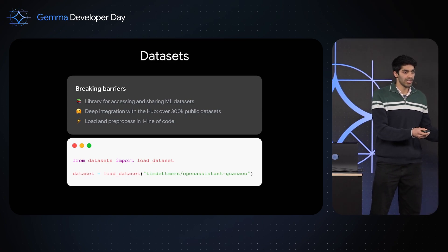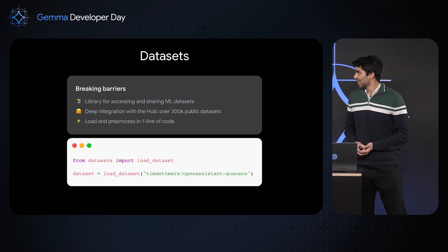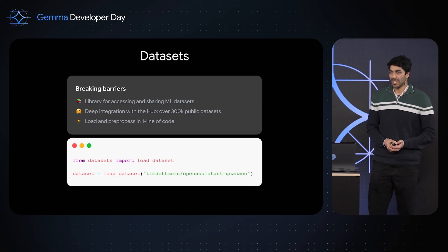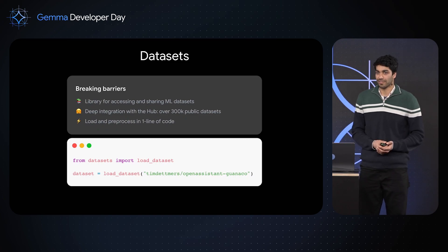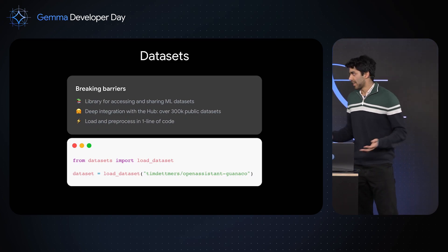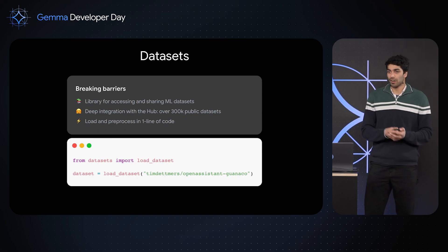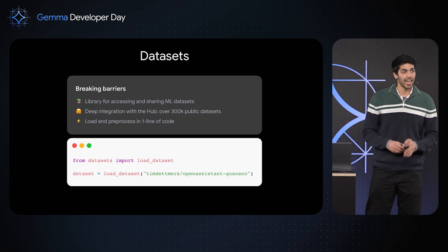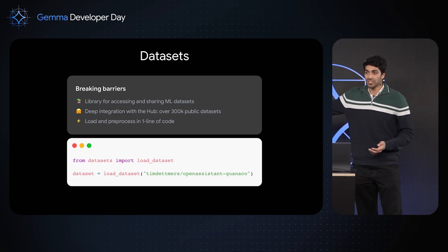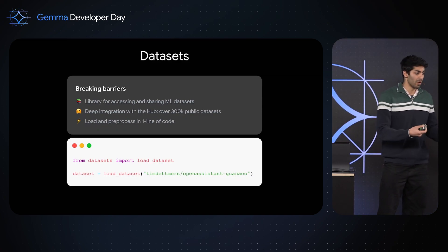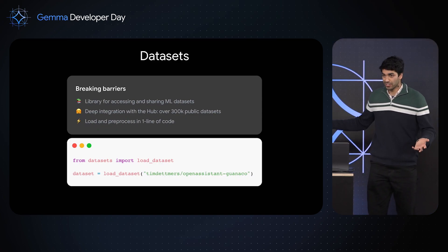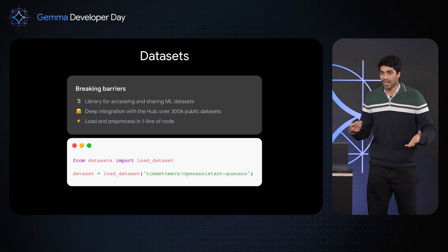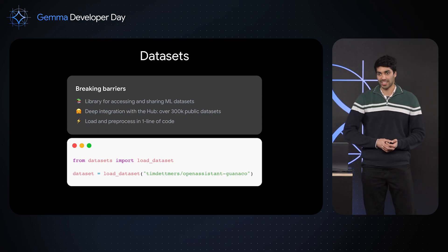What Transformers is to machine learning models, Datasets is to machine learning datasets. Datasets is a library for accessing state-of-the-art machine learning data, and it has a deep integration with the Hugging Face Hub — meaning you can load any public dataset on the Hub with just one line of code: load_dataset. The beauty of Datasets is that it takes care of all the loading and pre-processing for you. If you want a different dataset, you just switch the dataset ID — you don't have to figure out where to download the data or how to pre-process it for your model.